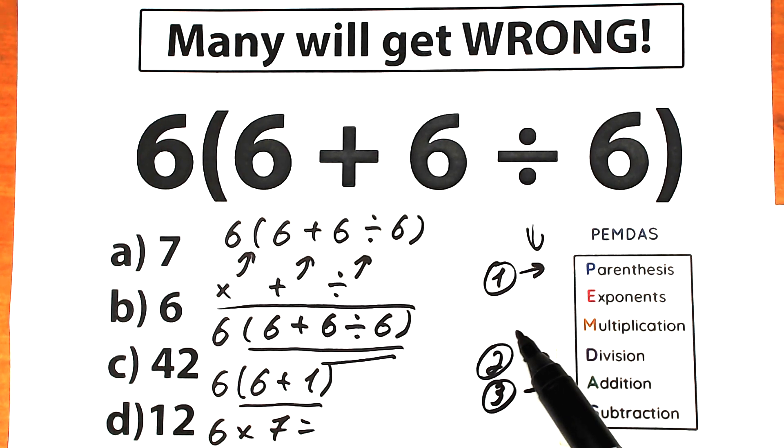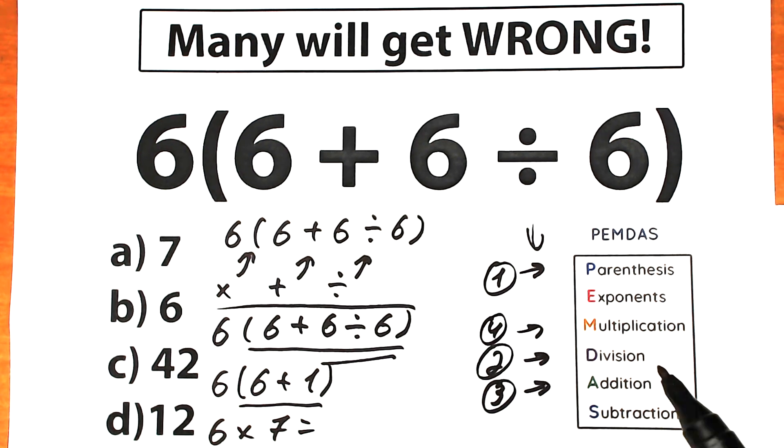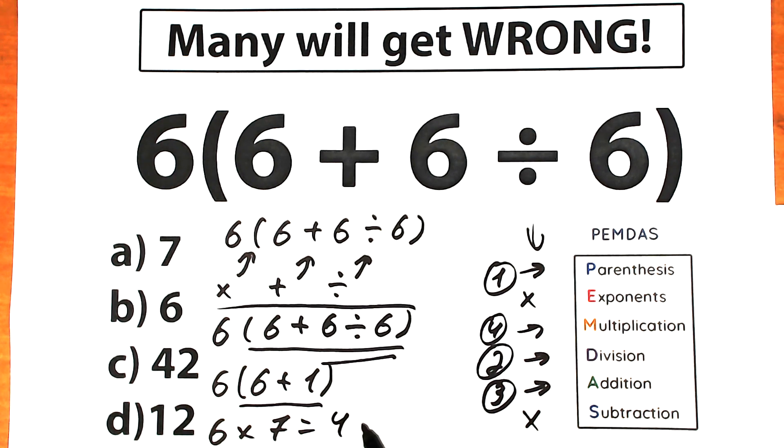This is our last step multiplication. As you can see, we don't have any exponents. We don't have any subtraction signs. So we just skip this part. So what do we have? We have 42.